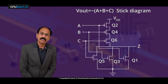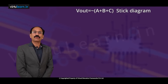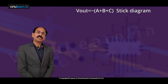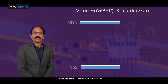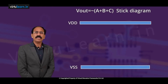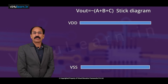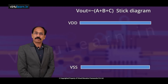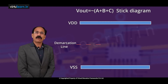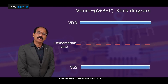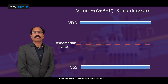Now we draw a stick diagram for this. How to draw? First we draw two power rails — one is VDD and another one is ground. We take enough space between them and we draw a demarcation line, a midpoint for both.